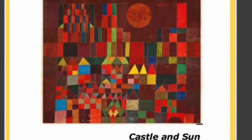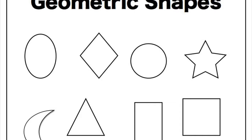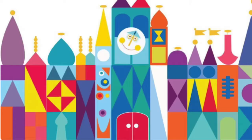What shapes do you see in this picture? Did you say triangles, squares, rectangles, and even a circle? These are called geometric shapes. They're the kind of shapes that you might see in math class.